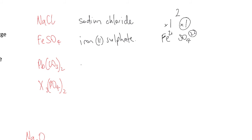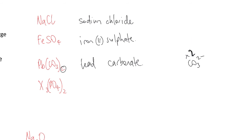Pb(CO₃)₂ — this is lead of some sort with carbonate. The carbonate is 2− and there's a subscript of 2, so the lowest common multiple is 4. Since it's 4 times 1 for the lead, the lead must be a positive 4. So this is lead(IV) carbonate.